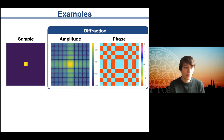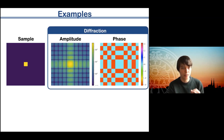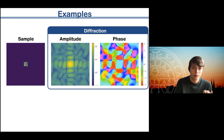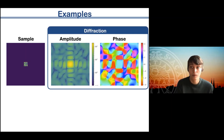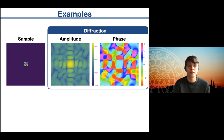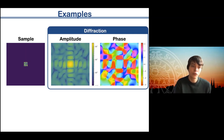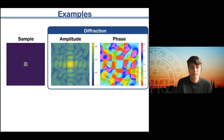Adding random structure inside the square is instructive: the central part of the diffraction pattern looks more or less the same as the plain square, but the outer parts look completely different. This reveals another key feature of the Fourier transform: the central parts code for low-resolution information and the outer parts code for high-resolution information. We didn't change much at low resolution, so the central parts remain intact, but we changed a lot at high resolution, so the outer parts are completely different.